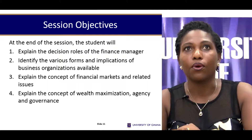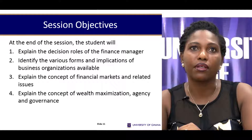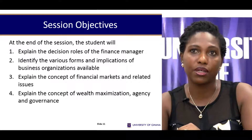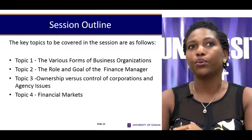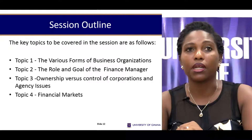To fully complete this session, students should be able to outline the role of the financial manager, look at the various forms of businesses and their implications in terms of liability and access to capital, explain the concept of financial markets and related issues, and explain the concept of wealth maximization, agency, and governance. For this unit we will look at the various forms of business organization, the role and goal of the finance manager, ownership versus control issues of corporations and the agency issues that arise, and financial markets.